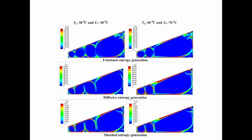In the CFD simulation shown here, the colors correspond to the entropy generation or entropy production term, showing where irreversibility is being generated in the solar still for various cases. Regions with red color correspond to where a large amount of entropy production is occurring, and blue is where it's not. The sun is coming in from the top.